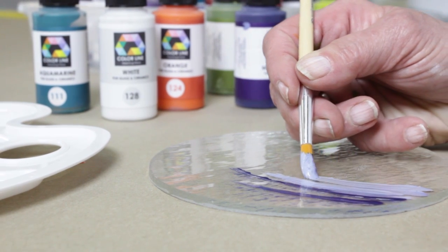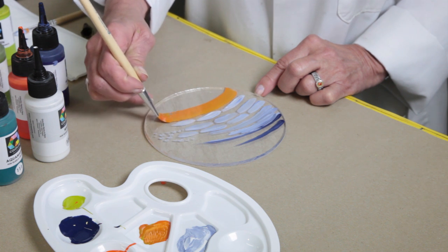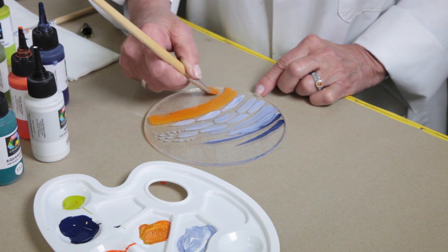Colorline paints are not only used on glass, but are also great for ceramics. All products are 100% lead-free and food-safe when fired.